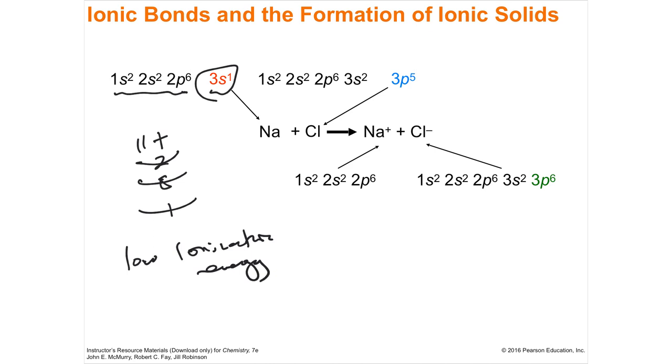So you can steal it off pretty cheap. And then the 3p5 is chlorine. Chlorine has a very high electron affinity. Remember, it's easy to steal an electron if you're chlorine.